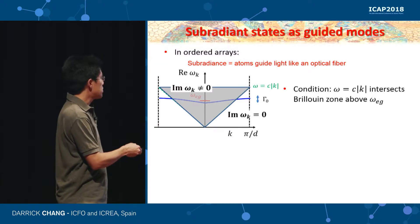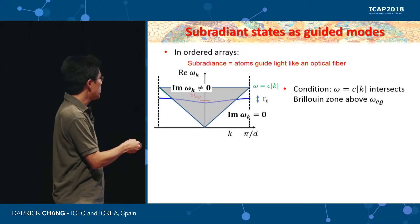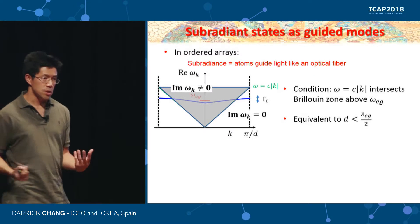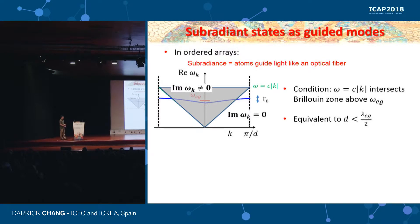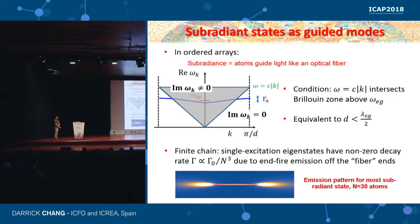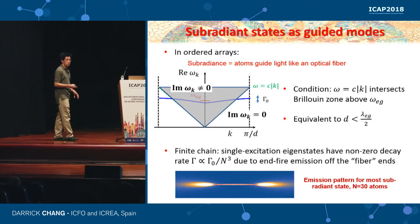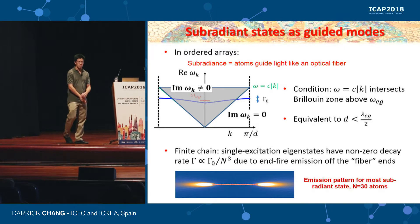The condition for existence of these subradiant guided modes is that the free-space dispersion ω = ck intersects the Brillouin zone edge above the bare atomic frequency, which translates to a lattice constant below λ/2. For a finite chain, light is guided along the fiber but leaks from the ends — end-fire emission. Numerically, with 30 atoms, the most subradiant state's decay rate scales as N^{-3}, and the input-output fields confirm end-fire emission from an optical fiber.